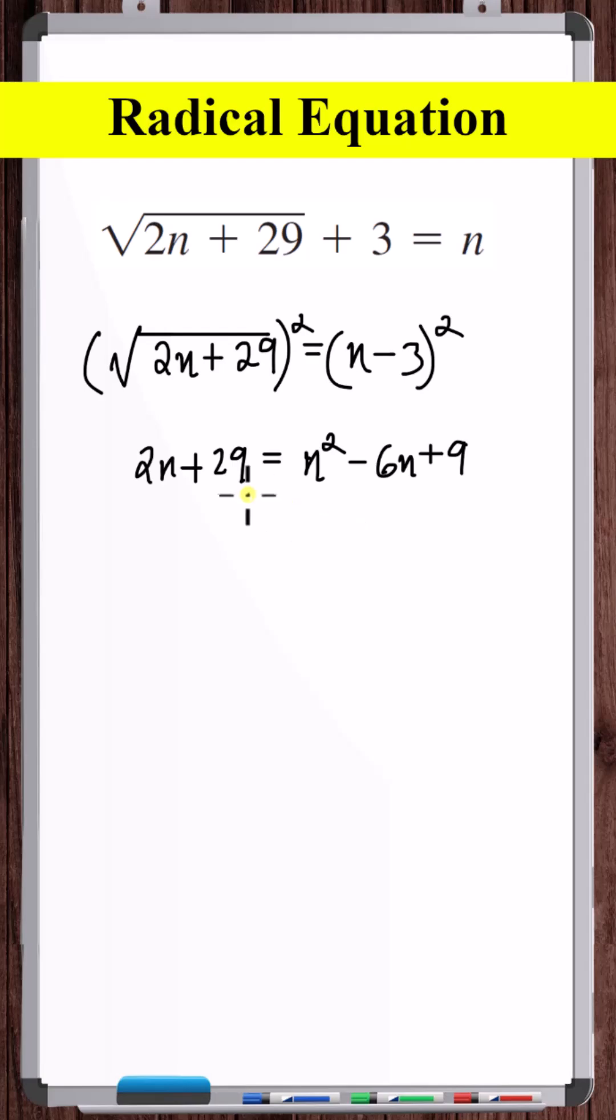Now, let's subtract 2n from both sides and subtract 29 from both sides. You get n squared minus 8n minus 20 is equal to 0.